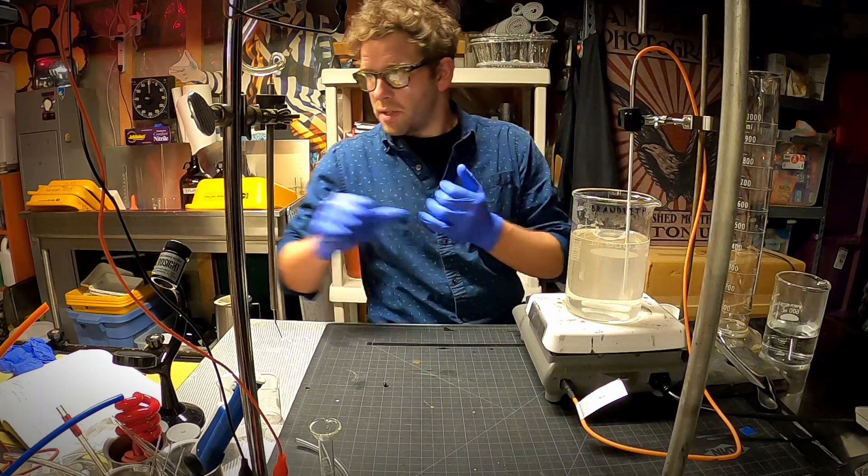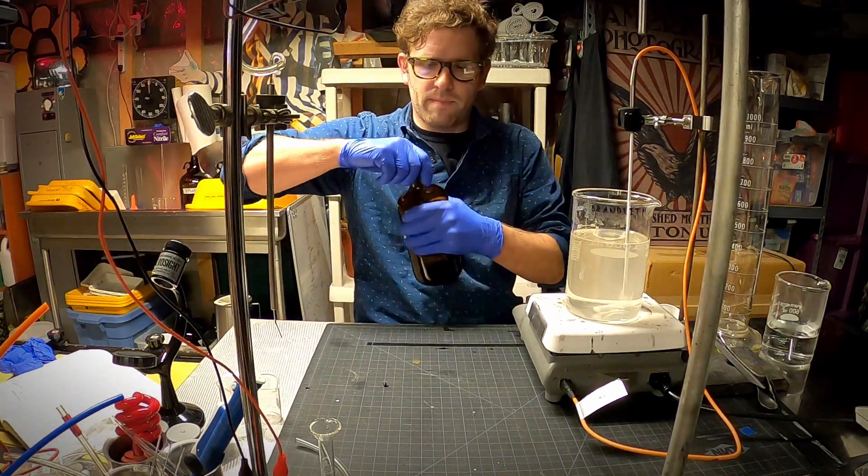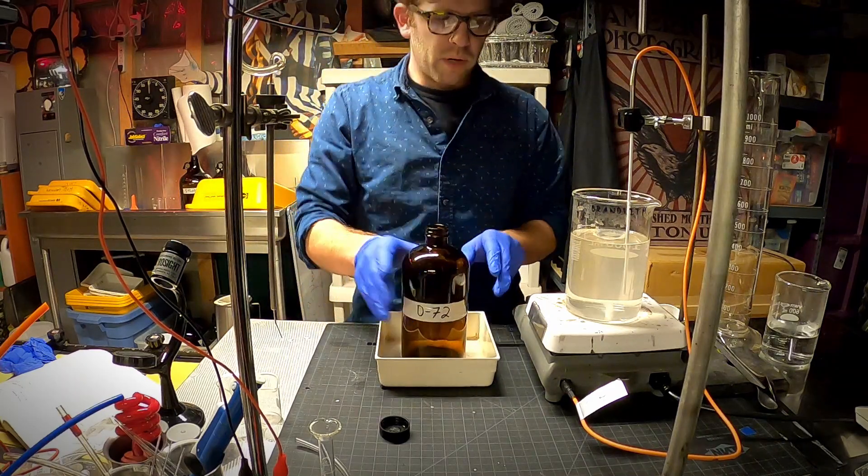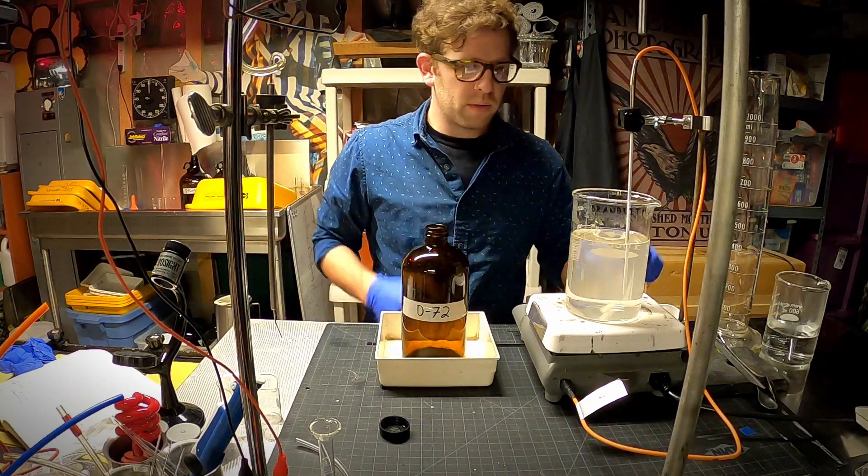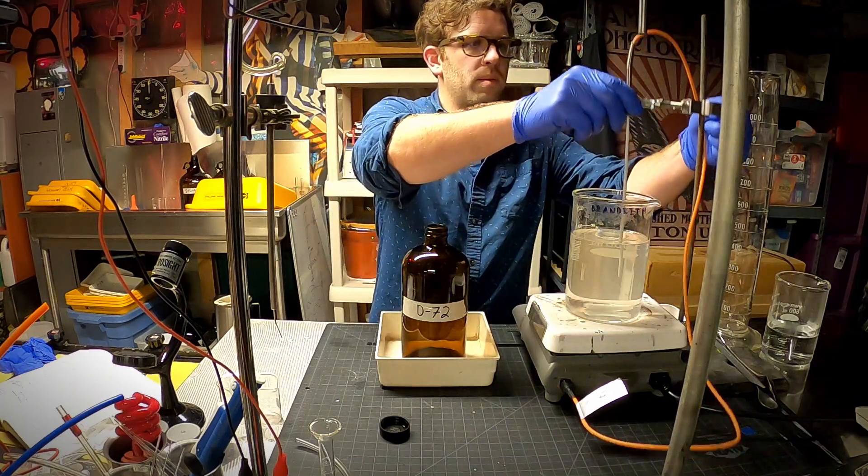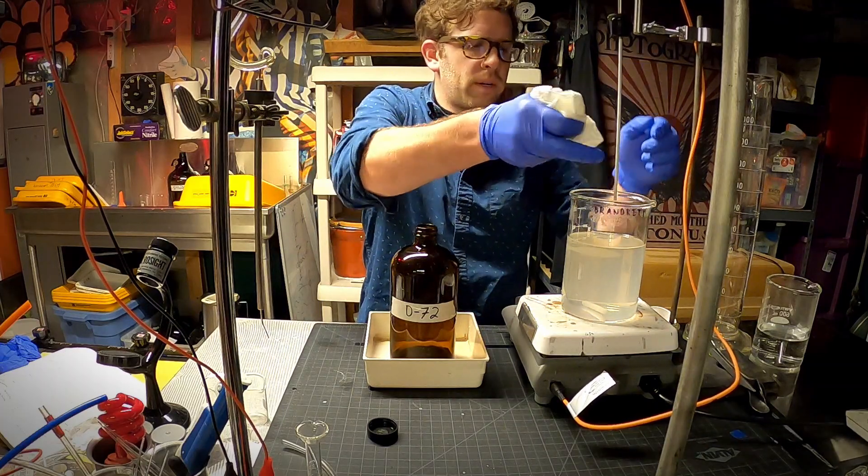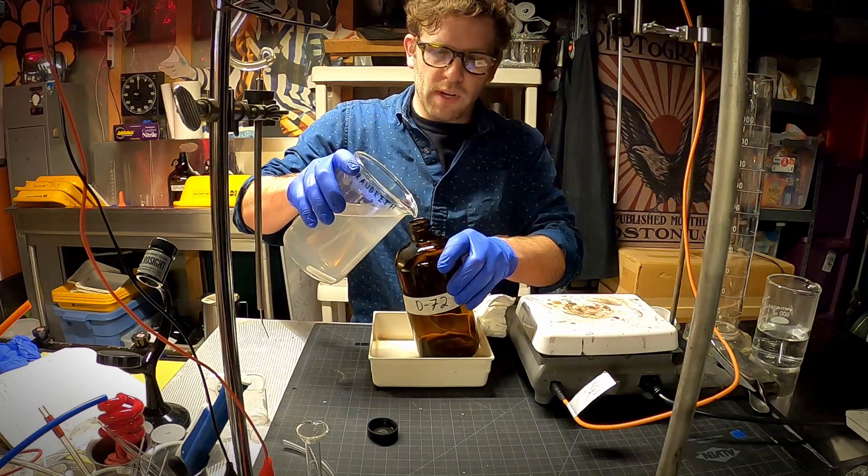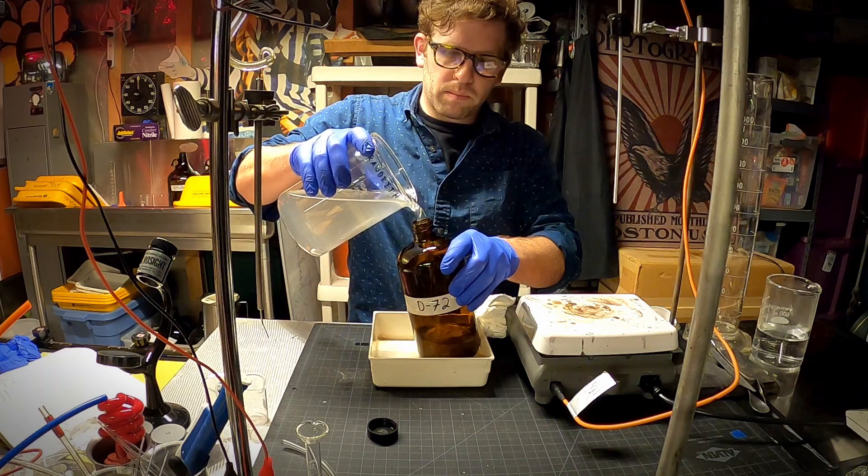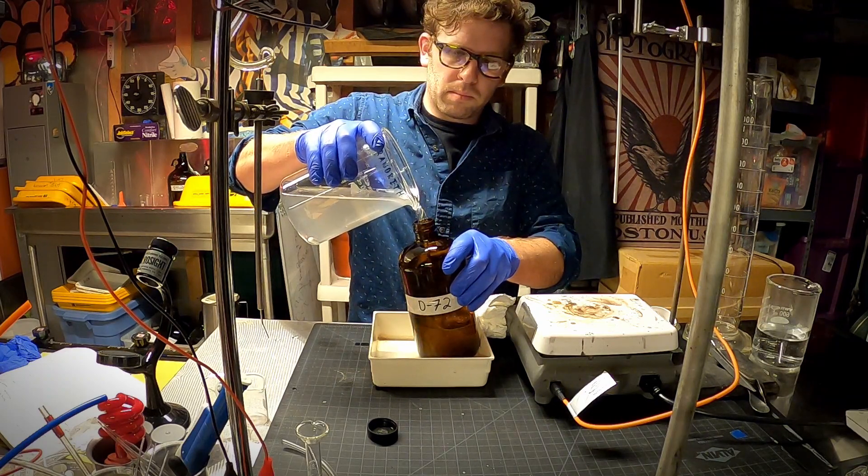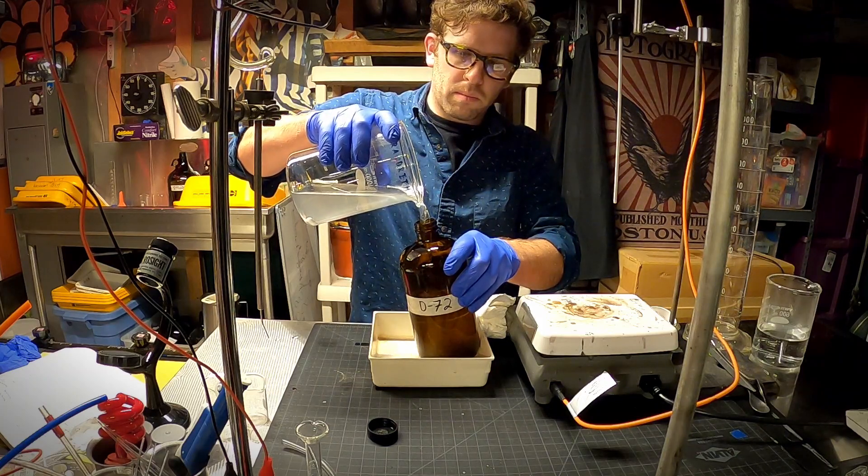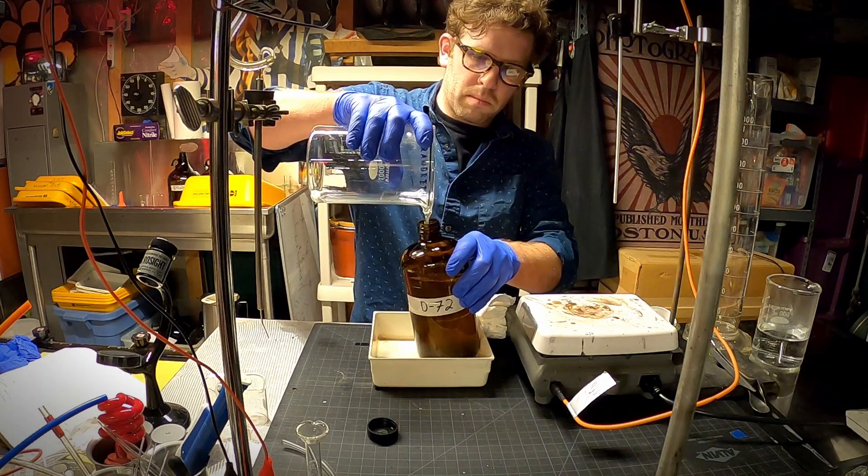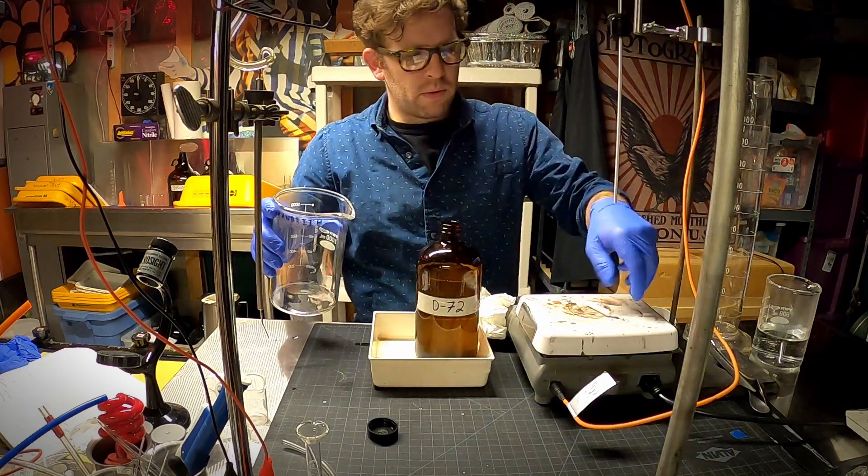The final step here is to get our bottle. Make sure it's labeled. Let's grab a tray so we don't make a mess. Let's pick our thermocouple, wipe that down real quick. And then we're going to pour this into our final storage vessel.